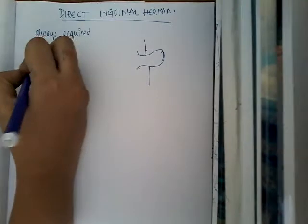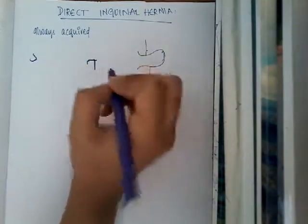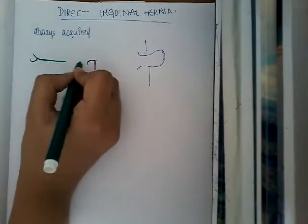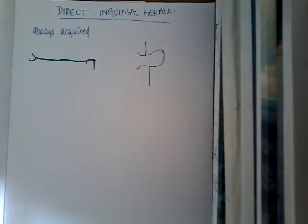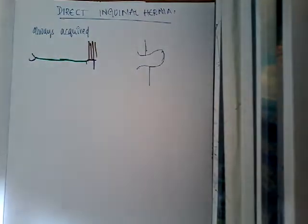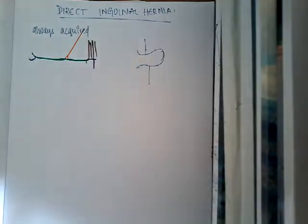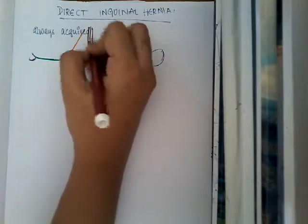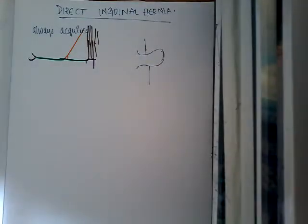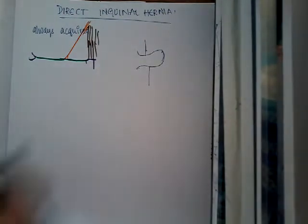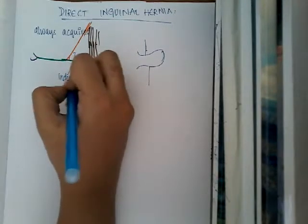What is Hesselbach's triangle? This is the anterior superior iliac spine, this is the pubic tubercle and pubic symphysis, and this is the inguinal ligament. Hesselbach's triangle is formed inferiorly by the inguinal ligament, medially by the rectus muscle, and laterally by the inferior epigastric artery.